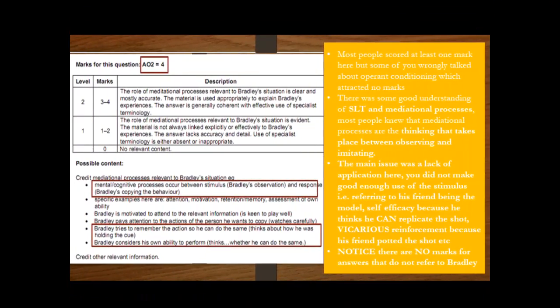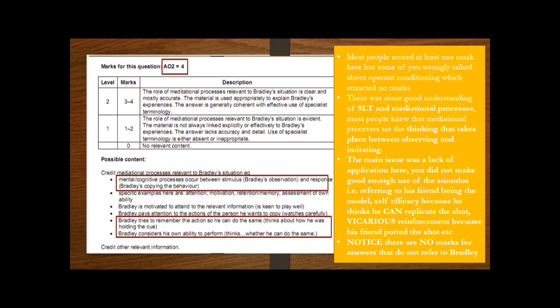As I've just said here, most people scored at least one mark, but some of you were wrong with talking about operant conditioning. There was some good understanding of social learning theory, mediational processes—so thinking before you act. The main issue here was, like I've just said, no application. I've given you an example: referring to his friend being the model, self-efficacy because he thinks he can replicate the shot, vicarious reinforcement because his friend potted the shot. Notice again, there are no marks for any answers that don't refer to Bradley. So annotate your answer, and then we're ready to move on to the final section, research methods.